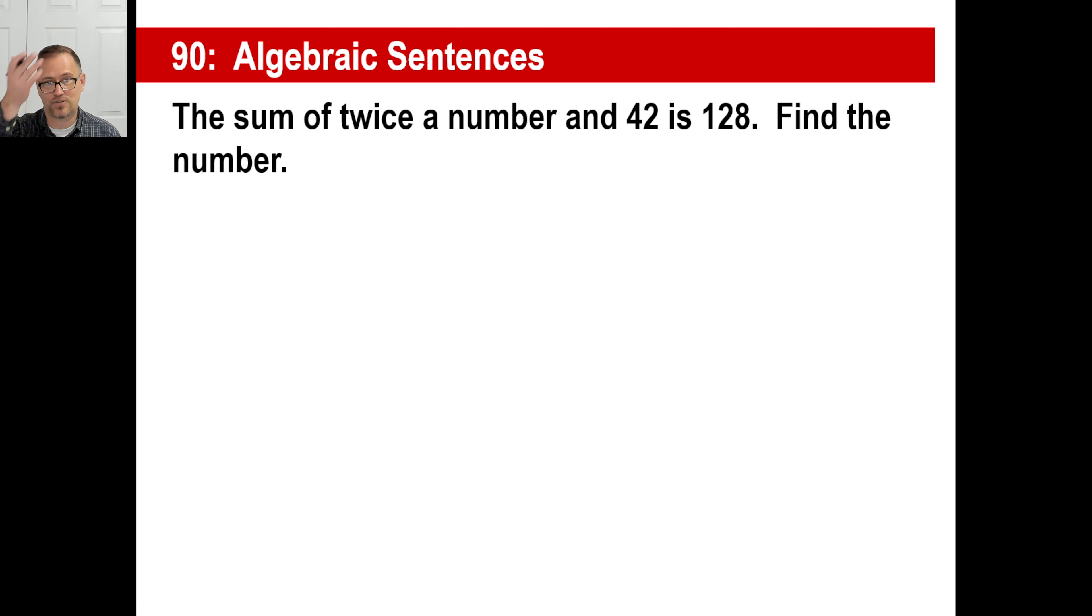All right. Let's actually try this then. Okay. The sum of twice a number and 42 is 128. Find the number. There you go. And if I were you, you can use a pencil lightly in your book.